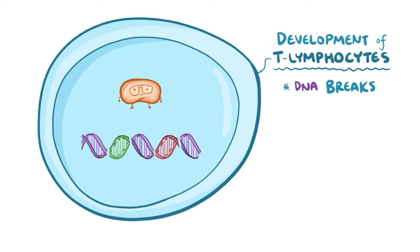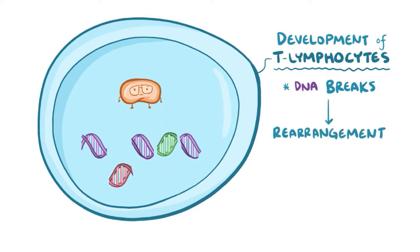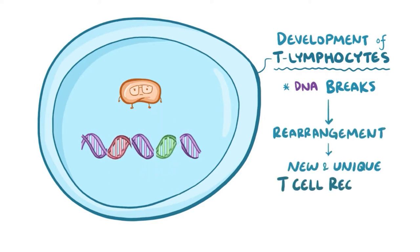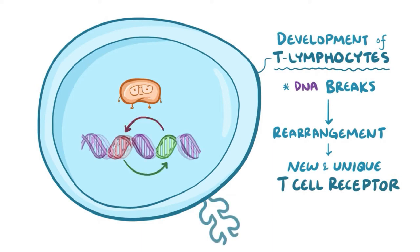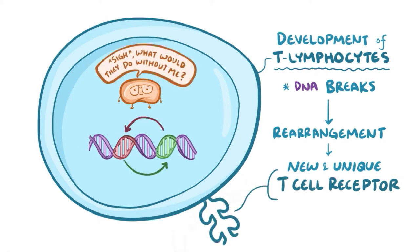That way parts of their DNA can be rearranged and code for new and unique antigen receptors. Once again, ATM helps to fix those breaks, and that keeps the T cells functioning normally.